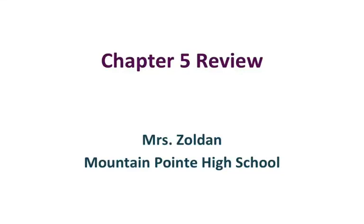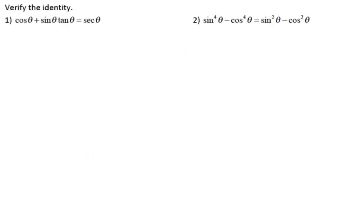Hello, here's the video going over the chapter 5 test review to help you get prepared for your test. The first part of your test is going to be verifying trig identities, and for verifying trig identities what you're trying to do is get the left side to equal the right side. So you do not touch the right side at all — you just manipulate the left side. You have the trig identities formula sheet so you can go ahead and start to make any sort of substitution that you can.